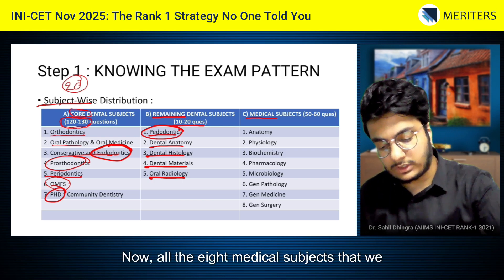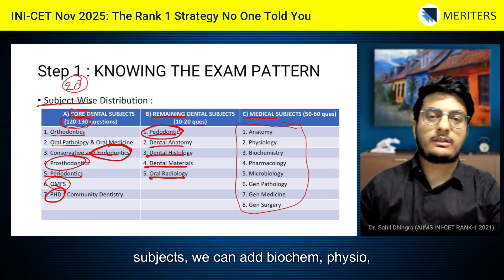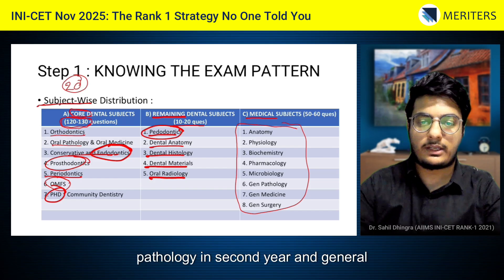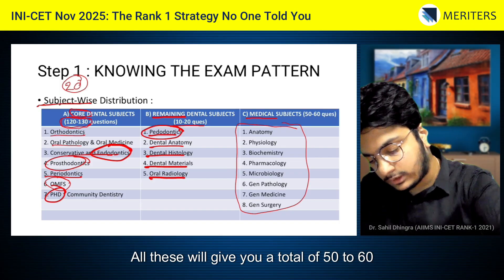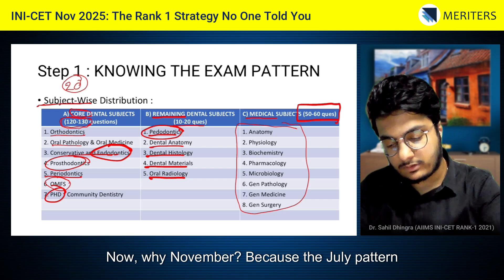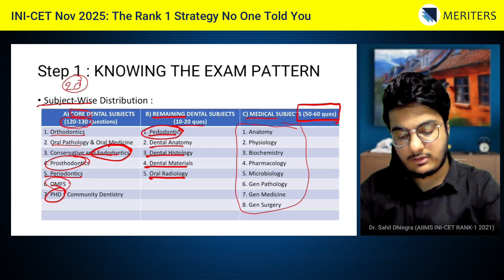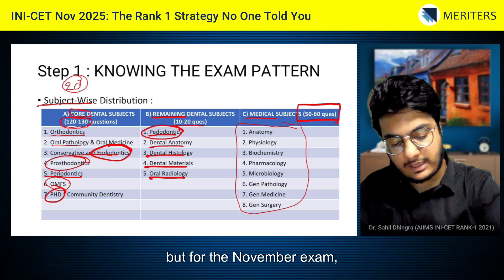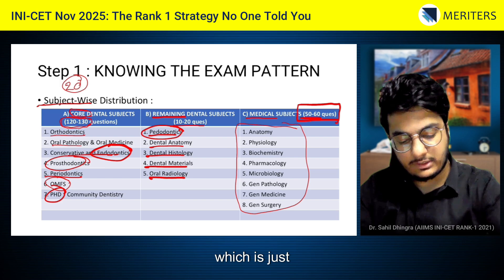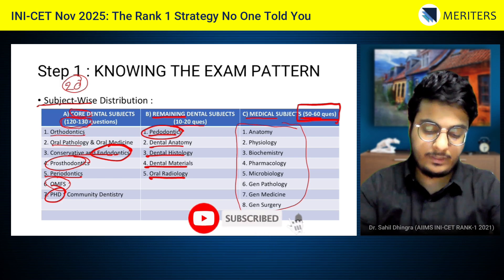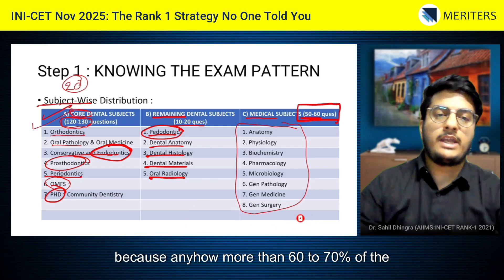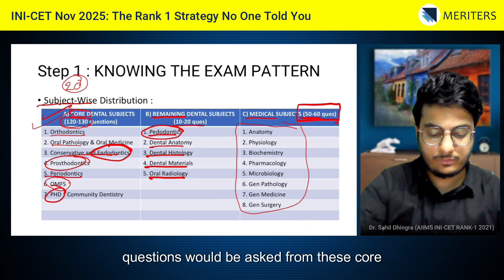Third is the medical subjects. All eight medical subjects — starting from first year subjects like biochemistry and physiology, moving to pharmacology, microbiology and pathology in second year, and then general surgery and general medicine — will give you a total of 50 to 60 questions in the INICET November exam. The medical subjects are quite important as almost 50 to 60 questions will come, just after the core dental subjects. So if you are short on time, the goal should be to first cover these core seven subjects, as more than 60 to 70 percent of questions come from them.